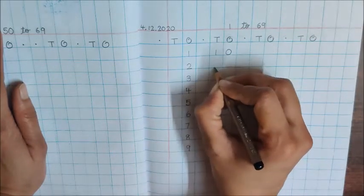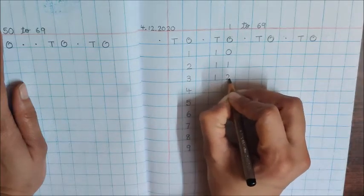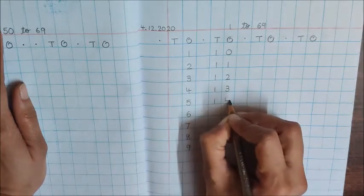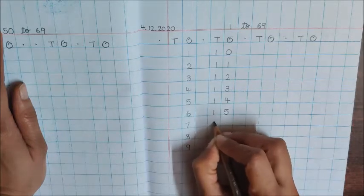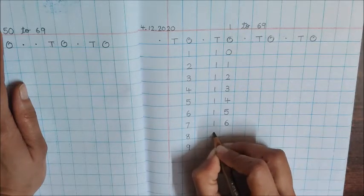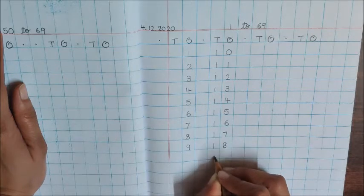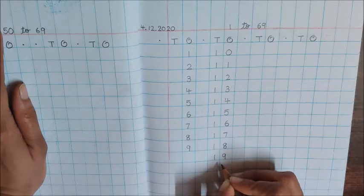10, 11, 12, 13, 14, 15, 16, 17, 18, 19. Now children, from here, you will continue writing numbers till 39 on this page.